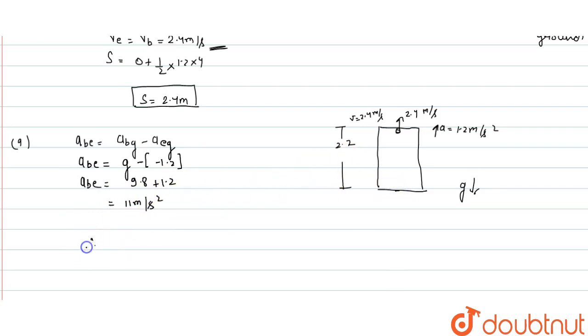Now for the distance, we will use the equation s equals ut plus half at square. S given is 2.7 equals to initial velocity given, upside positive we will take, initial velocity 2.4, one second. Here we have to remember s equals ut, ut initial velocity is 0.